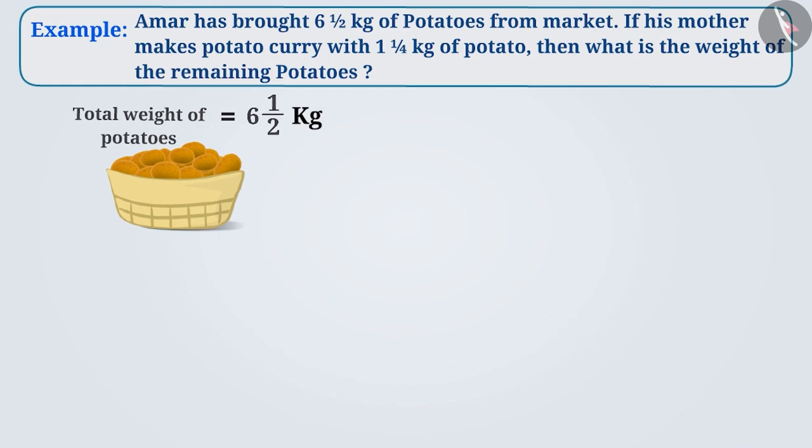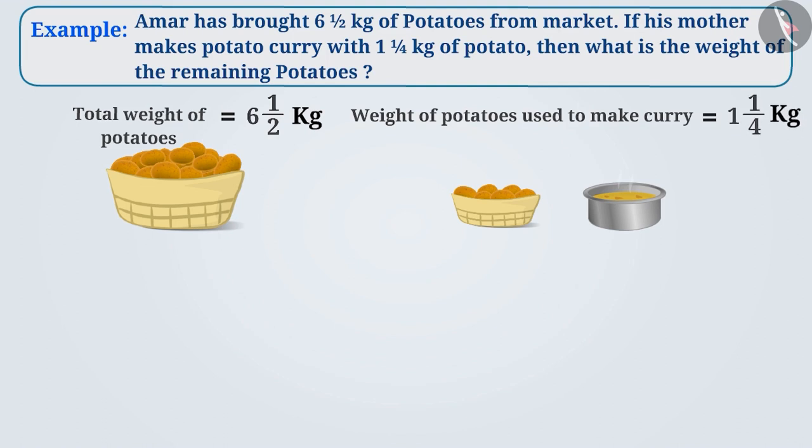The total weight of potatoes brought from the market equals 6½ kg. The weight of potatoes used to make the curry is 1¼ kg. The weight of the remaining potatoes can be found by subtracting 1¼ from 6½.